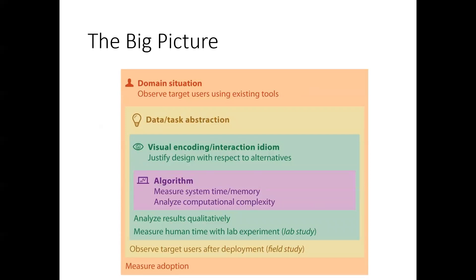So Munzner starts with the big picture. And the main idea that you can see here is you can choose your validation technique based on which level you want to validate. So if you're looking at the algorithm level, you want to measure system time to accomplish the algorithm, perhaps memory or analyze computational complexity in terms of big O notation.